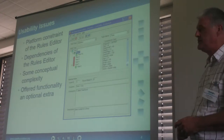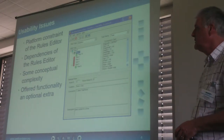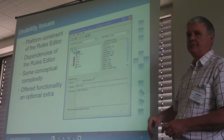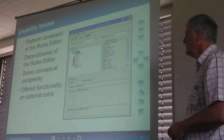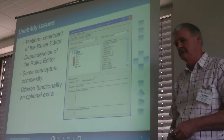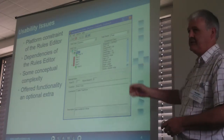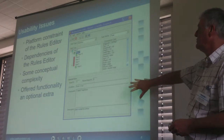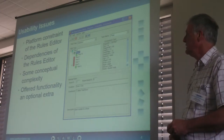The usability issues of the old rules editor include: it's Windows-dependent and won't run well on other platforms. It depends on other things being available — logs and outcomes of selection processes in the rule space. There is some conceptual complexity in that it exposes too much about Ripple Down Rules beyond what needs to be known to actually add rules. And because of these difficulties, it may have limited the use of the worklet service.